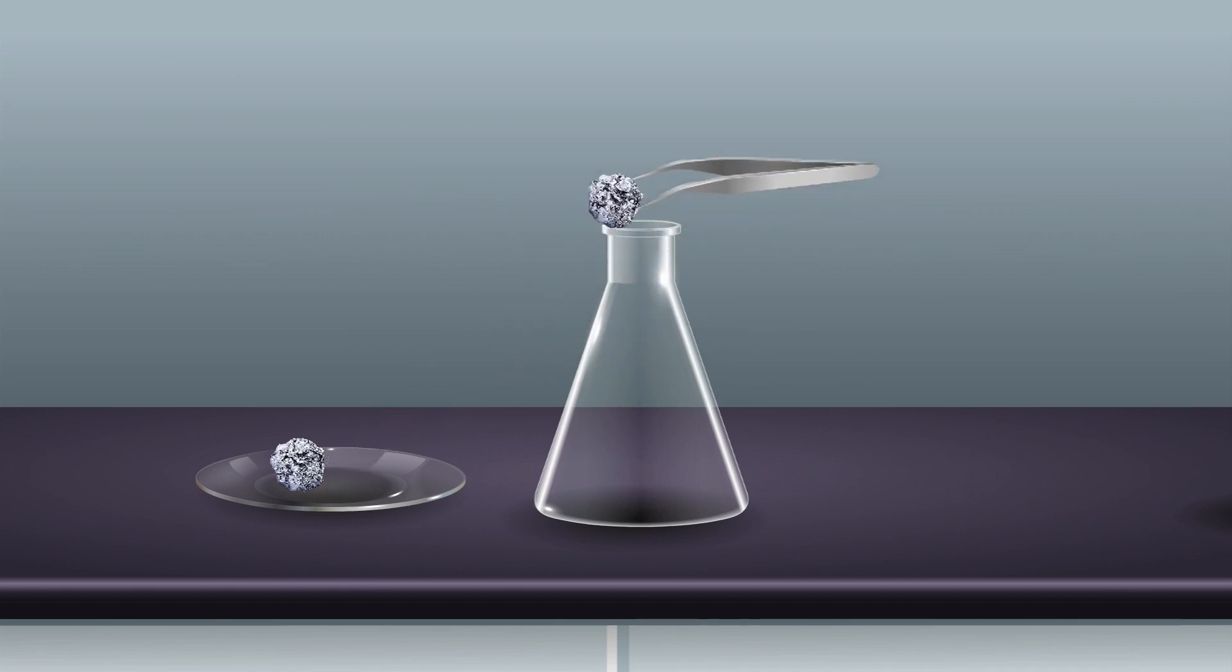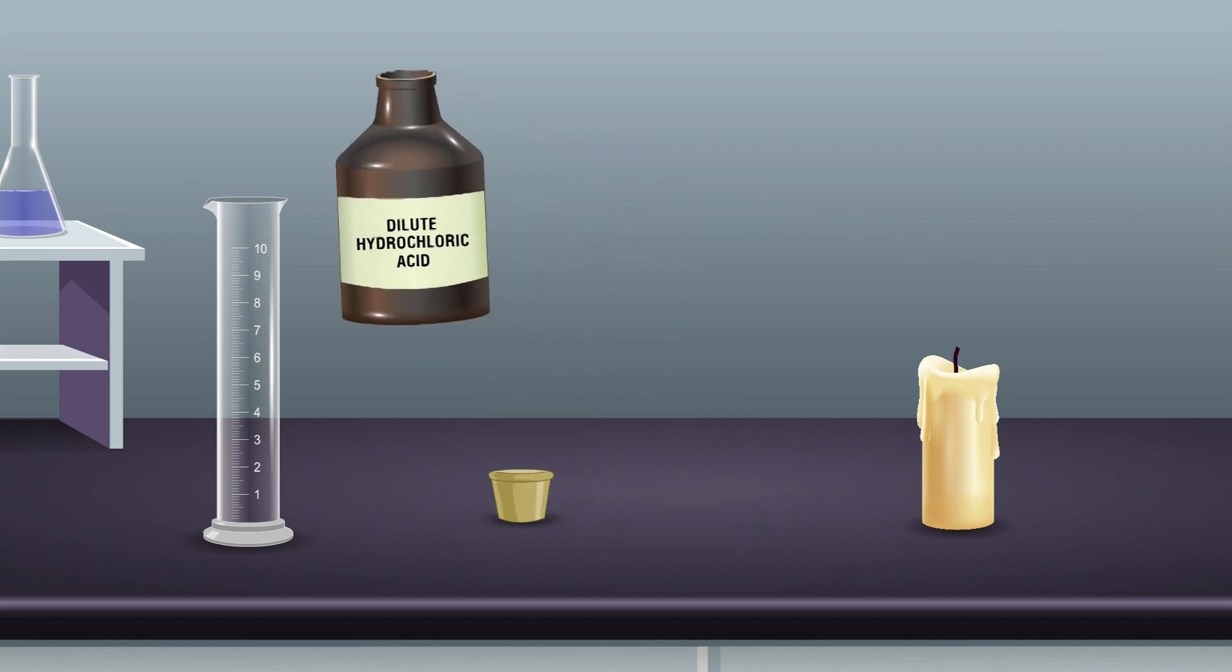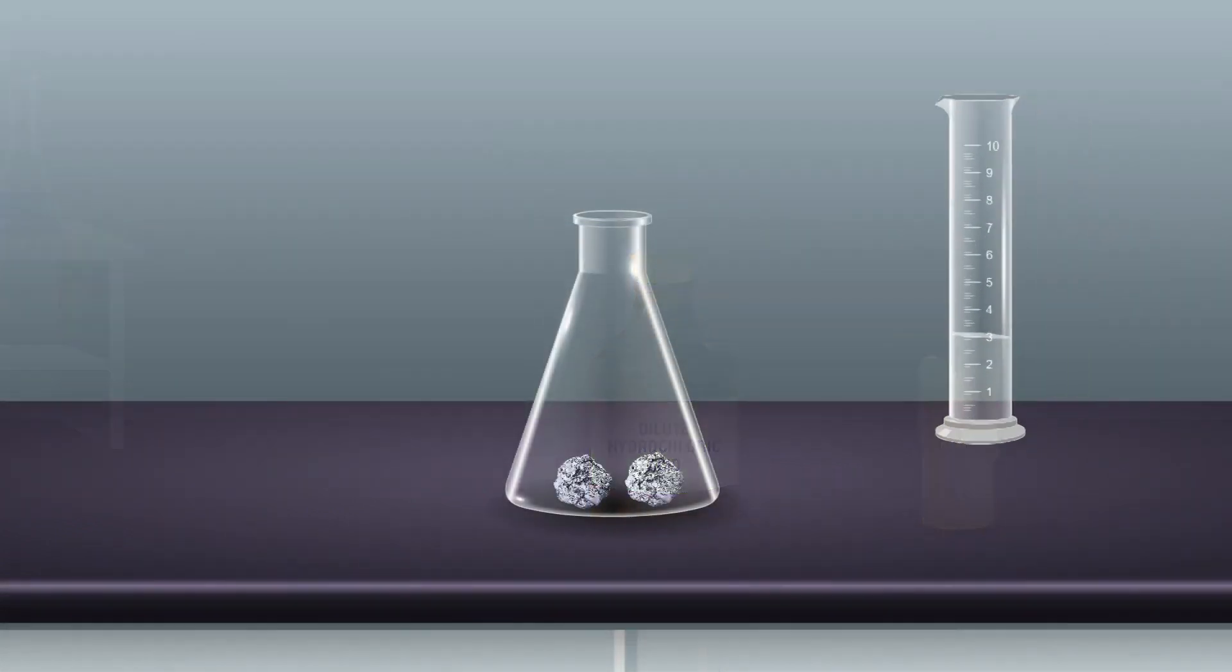Take a few pieces of aluminium foil in a dry conical flask using forceps. Pour 3 ml of dilute hydrochloric acid into the conical flask using a measuring cylinder.